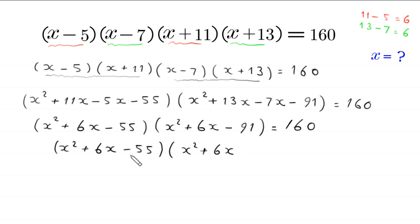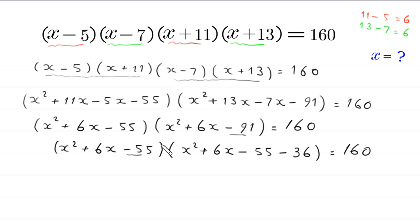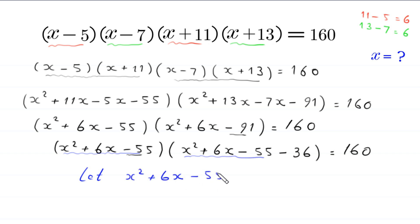Since here we have negative 55, we can rewrite negative 91 as negative 55 minus 36, giving us x squared plus 6x minus 55 times x squared plus 6x minus 55 minus 36 is equal to 160. We suppose that the expression x squared plus 6x minus 55 is equal to t. So this equation will become t times t minus 36 is equal to 160.